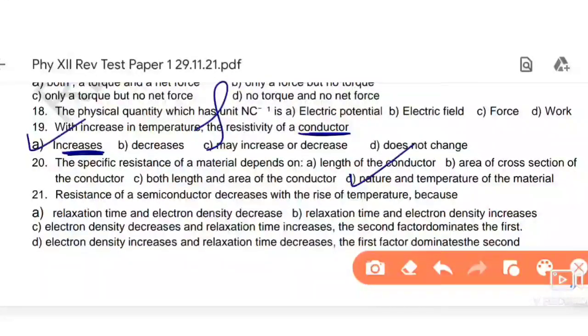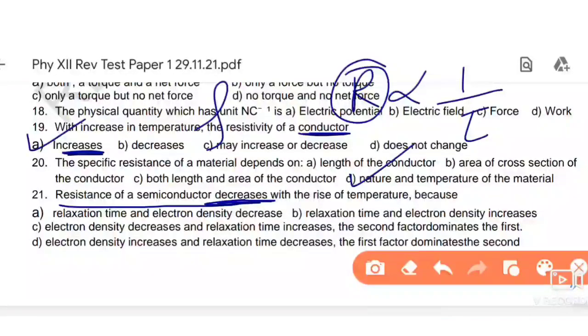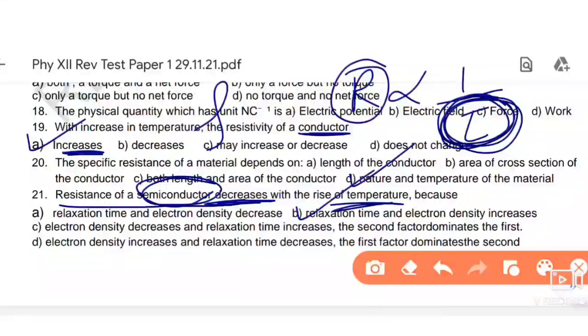With increase in temperature, the resistivity of conductor. If we increase temperature, resistivity of conductor will also increase. Resistivity increases in conductor case, and in insulator case it decreases. Next, the specific resistance of a metal depends on. Rho doesn't depend on length or area. It depends only on what material it's made of - nature and temperature. Option number D is the right answer. Resistance of a semiconductor decreases with rise of temperature.